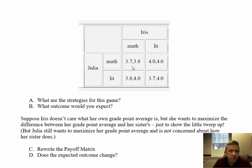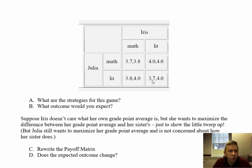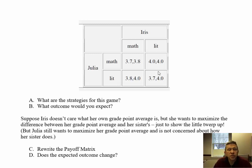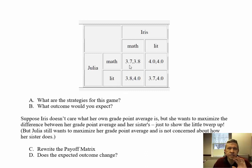Let's look at each outcome to determine if players would switch. Where Julia chooses math and Iris chooses lit, they're both getting a 4.0 — neither has an incentive to change. If Julia switches to lit, she goes from 4.0 to 3.7; she would not want that. If Iris switches to math, she goes from 4.0 to 3.8; she would not want that either. So Julia choosing math and Iris choosing lit is a Nash Equilibrium. What about both choosing lit? Julia could do better by switching to math — 4.0 is better than 3.7 — so both choosing lit is not a Nash Equilibrium. What about both choosing math? Julia gets 3.7 but could get 3.8 by switching to lit, so somebody wants to change — not a Nash Equilibrium.